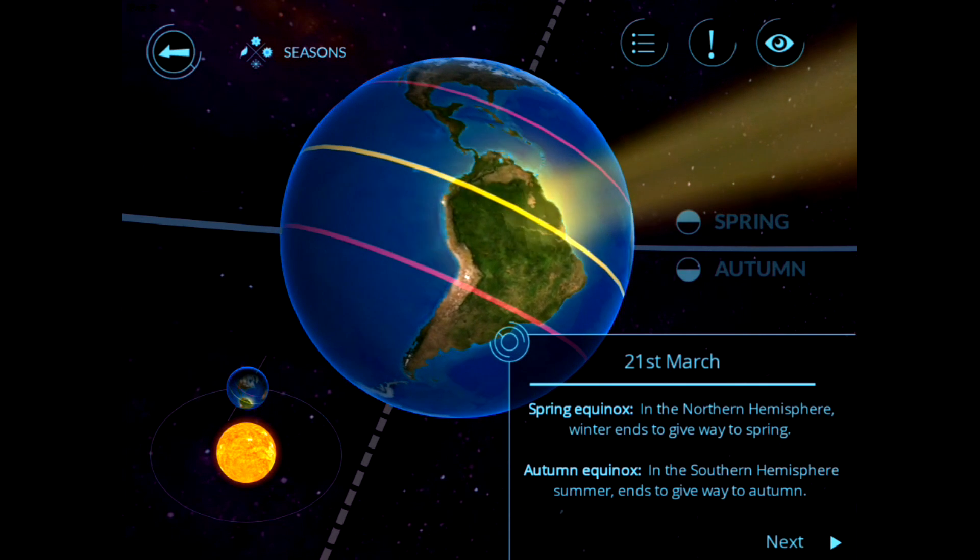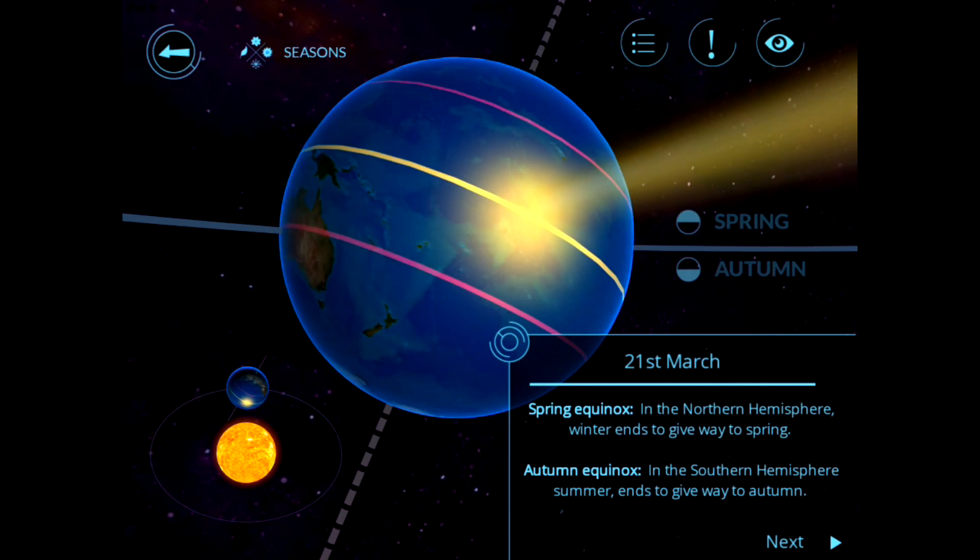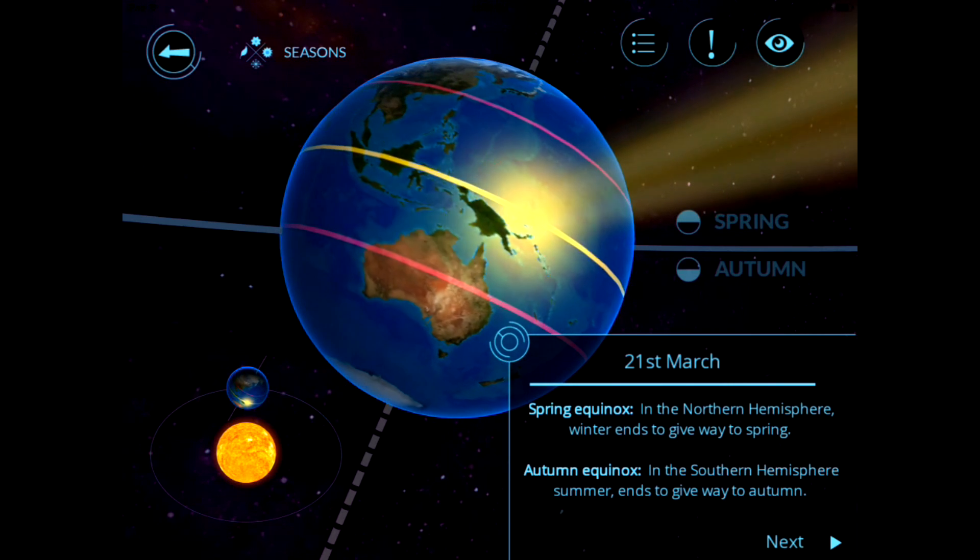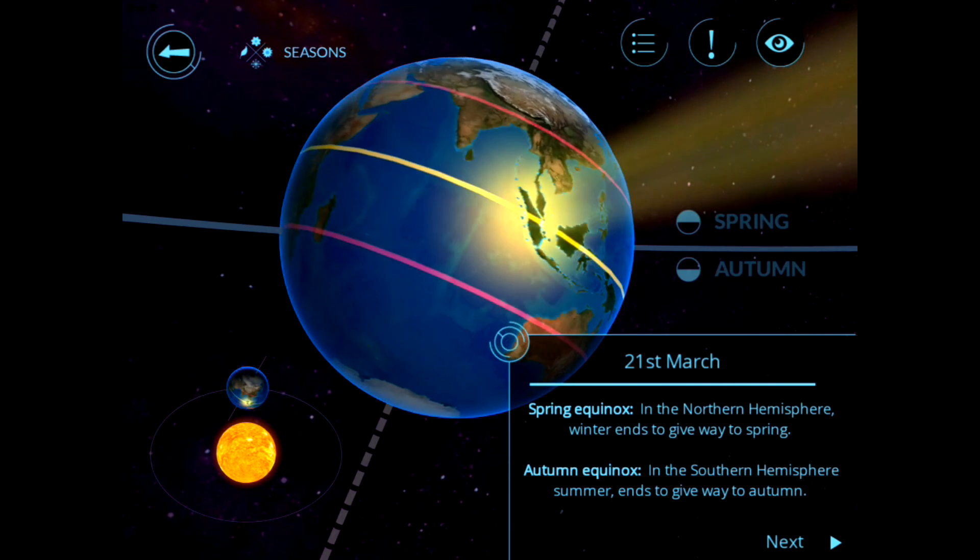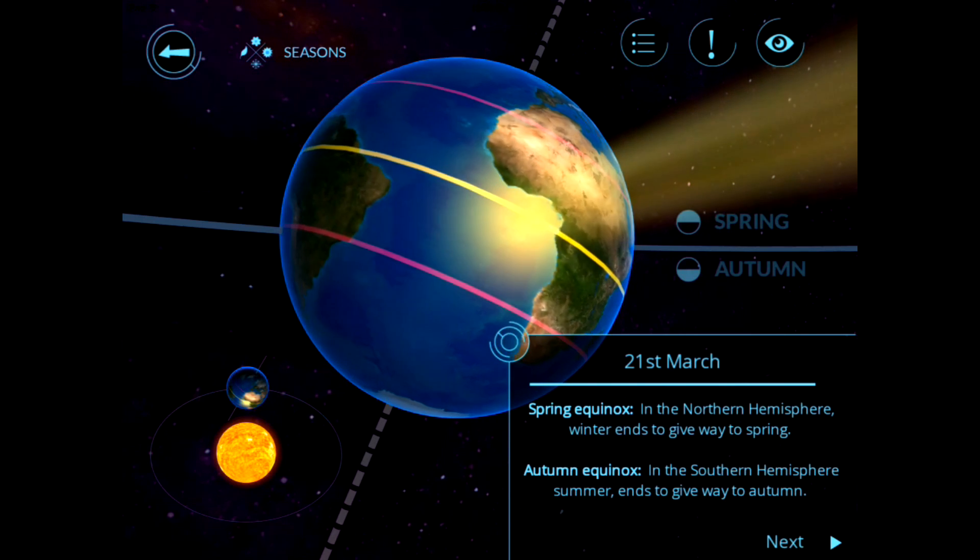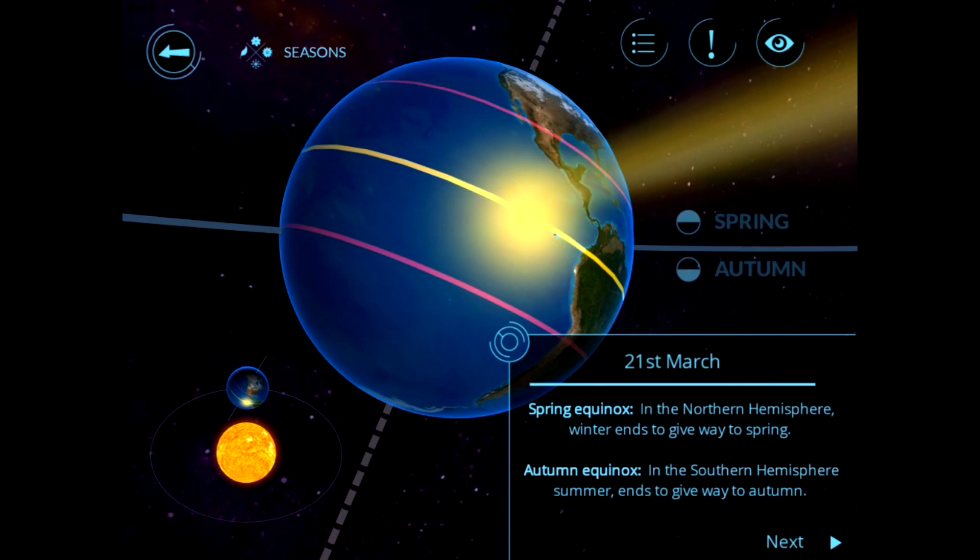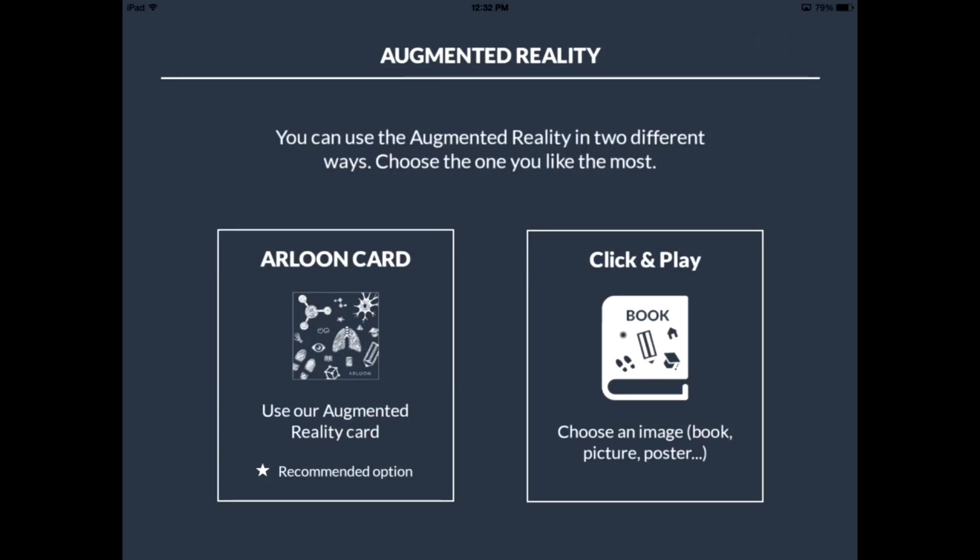Arloon Solar System also has this really cool feature that's augmented reality. With the augmented reality feature, you can take things in the app, such as a rotating Earth, and you can place it in your environment. This is incredibly cool. So, to activate it, click on the eye.